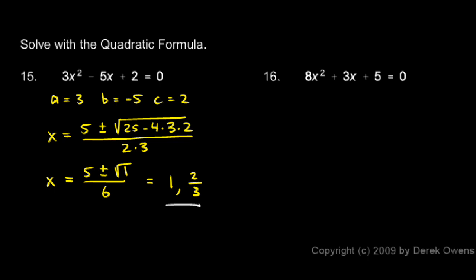In number 16, a is equal to 8, b is equal to 3, and c is equal to 5. So we'll put those numbers into the quadratic formula. x is equal to negative b, which is negative 3 in this case, plus or minus the square root of b squared, b squared will be 9, minus 4 times a times c, so that's 4 times 8 times 5, all over 2a, so that's 2 times 8.